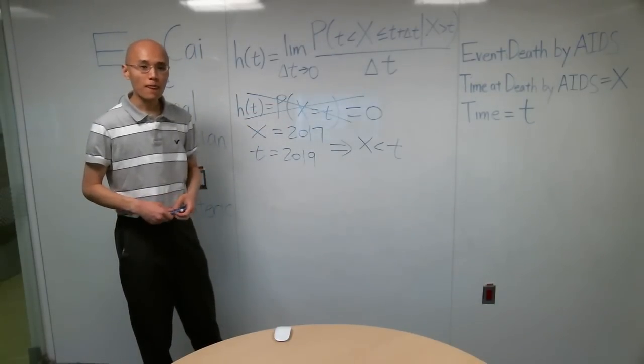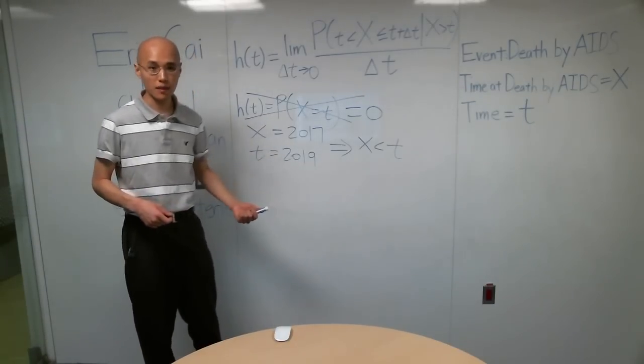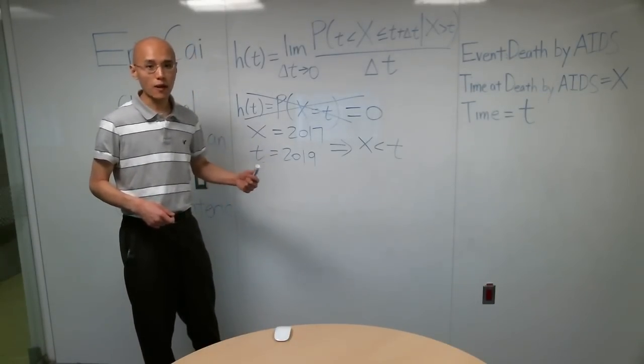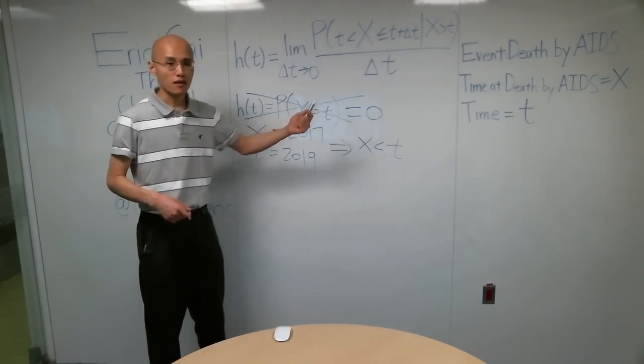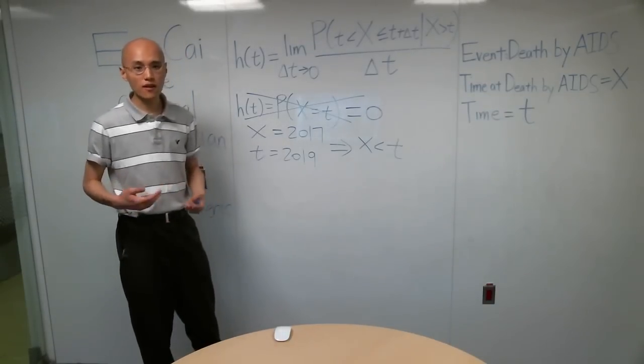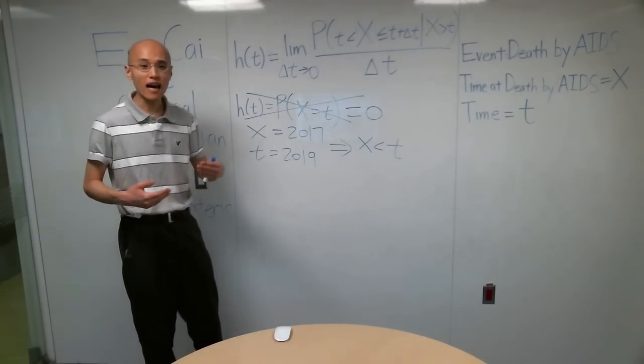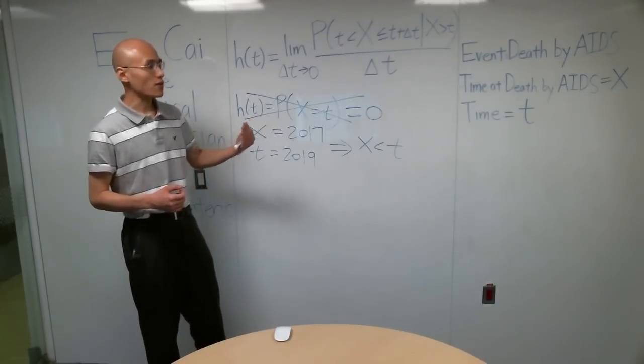So in other words, if our patient died before the study began, the probability of the patient dying in some interval of time after the study began is definitely zero. So we have to condition on the event that the patient hasn't died yet. We have to condition on the event that X is bigger than T.